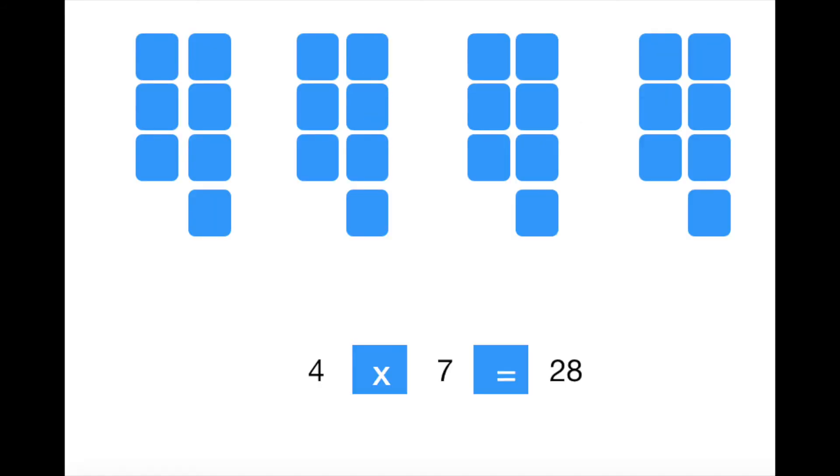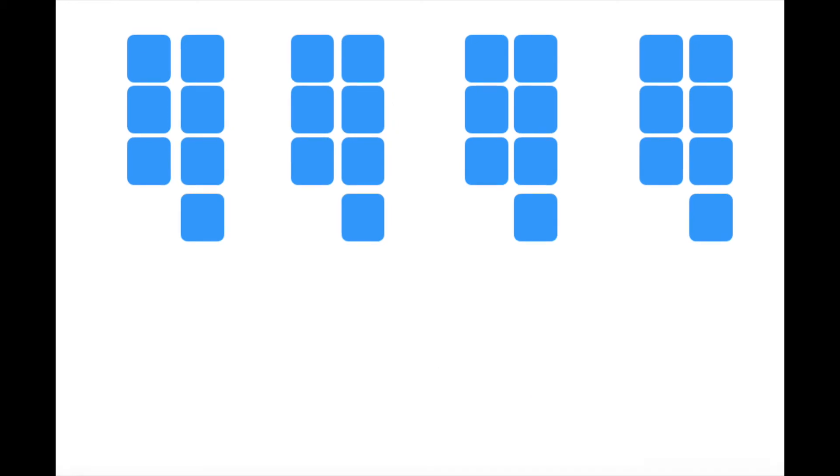Children that are confident with their times tables might automatically be able to solve this problem as four times seven equals 28.